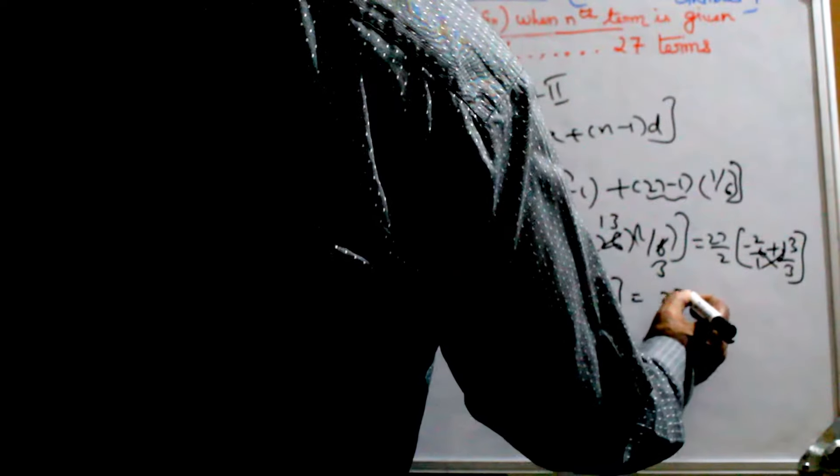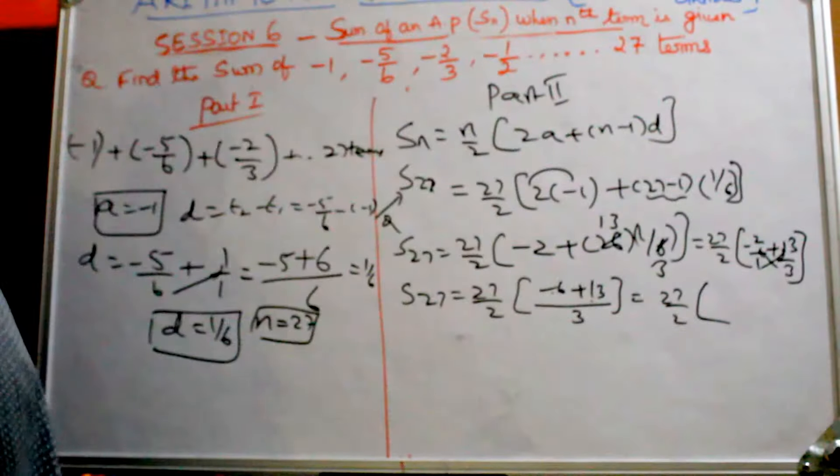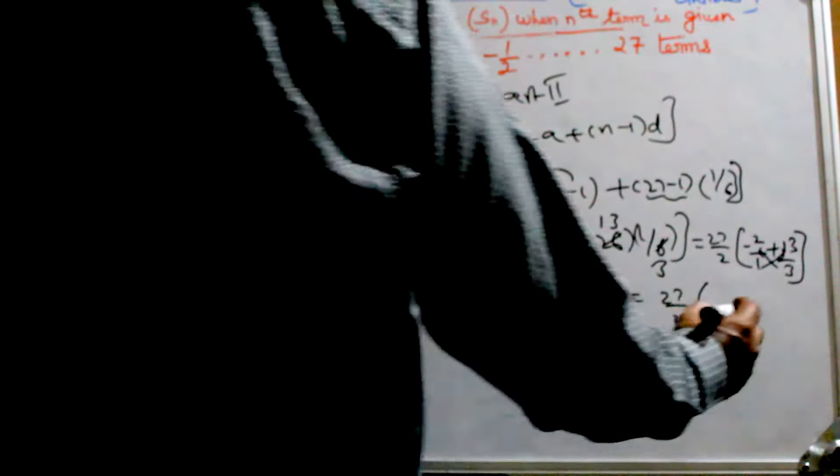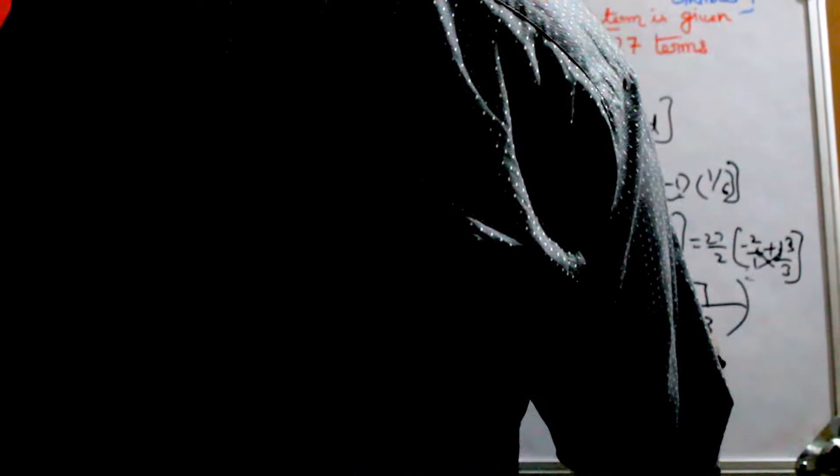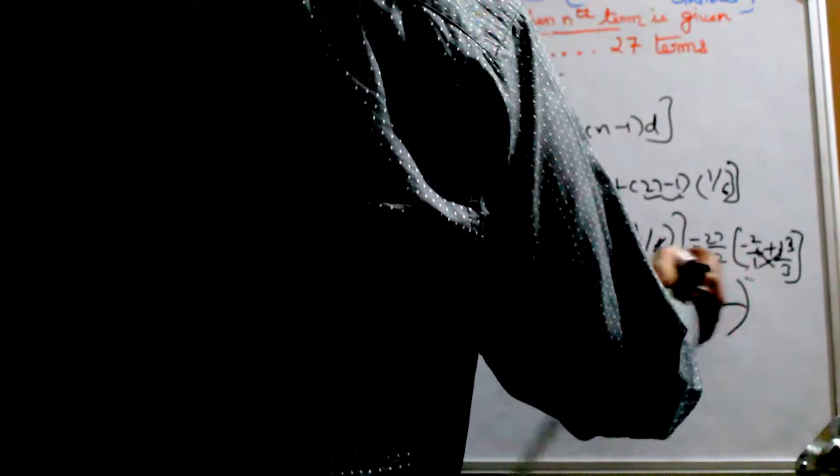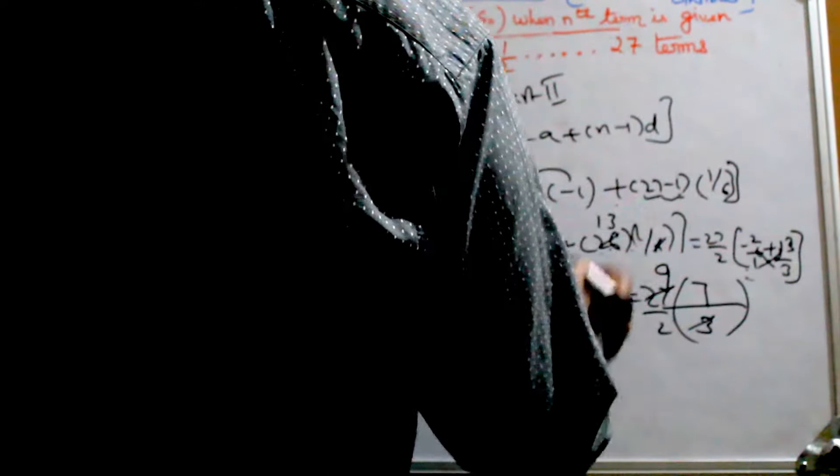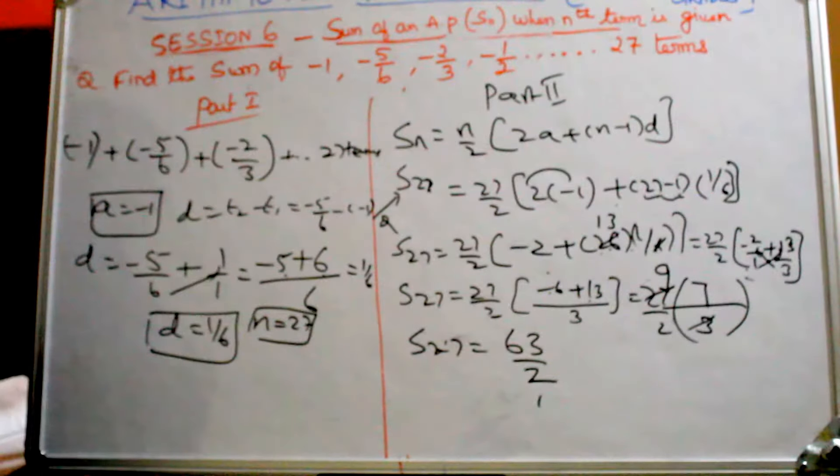So you get 27/2 times 7/3. Now 3 goes into 27 nine times. So 9 times 7 is 63. 63/2 is the answer for sum of 27 terms. This is the final answer.